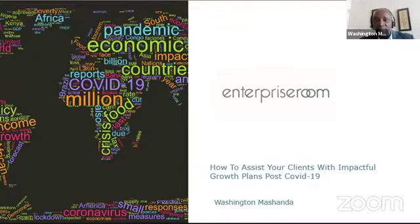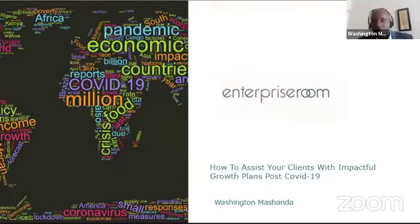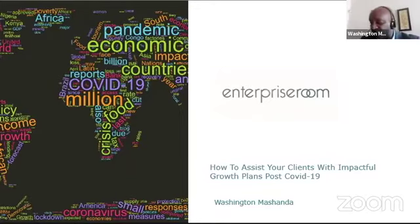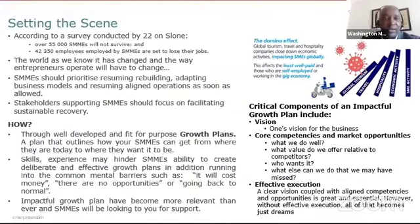My name is Washington Mashanda. I am with Enterprise Room, which is a transformation consultancy specializing in enterprise, supplier, and social development. We are very passionate about transformation through entrepreneurship, and we help governments and corporates maximize their transformation scorecard and align that to their business strategies.